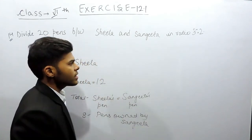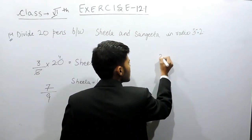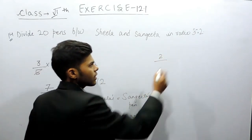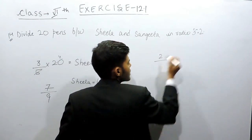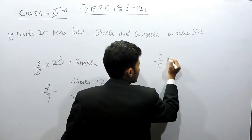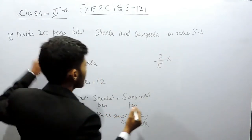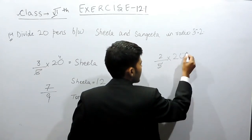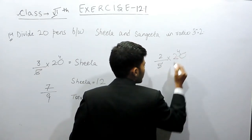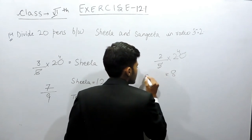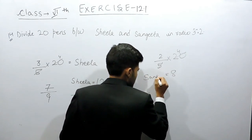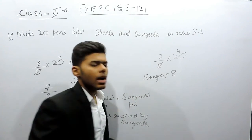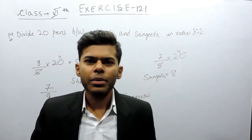Or what we can do is: she will get 2 pens — in the denominator the total pens are 3 plus 2, that is 5 — multiplied with the total number of pens, that is 20. So 5 goes 4 times into 20 and 2 times 4 is 8. So this is how you can solve this question. Thank you.